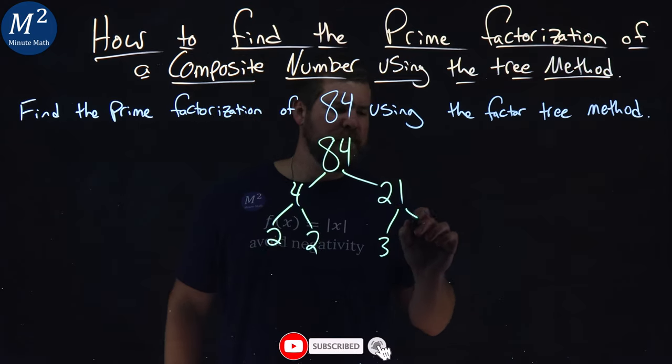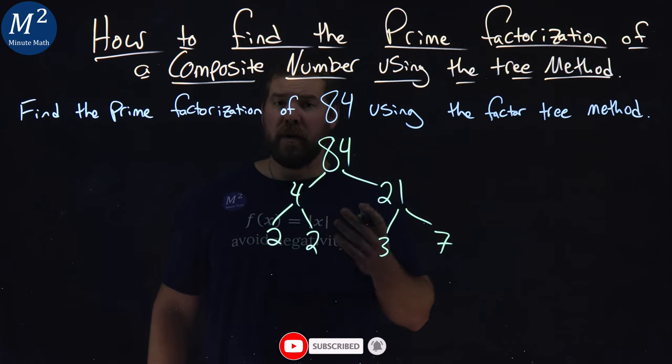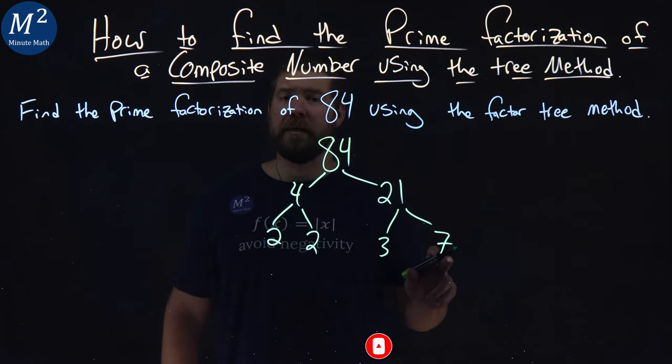21, that's 3 times 7. And look, again, prime numbers, 3 and 7.